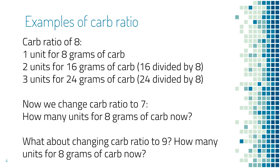If you reduce carb ratio, you get more insulin for the same amount of carb. For example, if we reduce carb ratio to 7, it means giving one unit of insulin for every 7 grams of carb, so you get a little more than one unit of insulin for 8 grams of carb. The other way is also true: if you increase carb ratio, you will get less insulin for the same amount of carb.